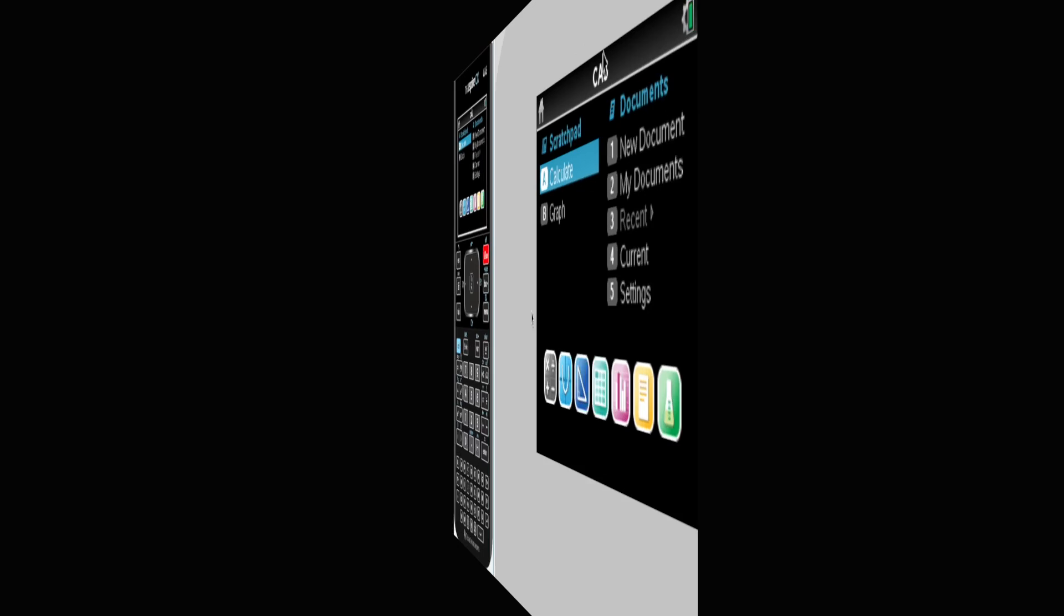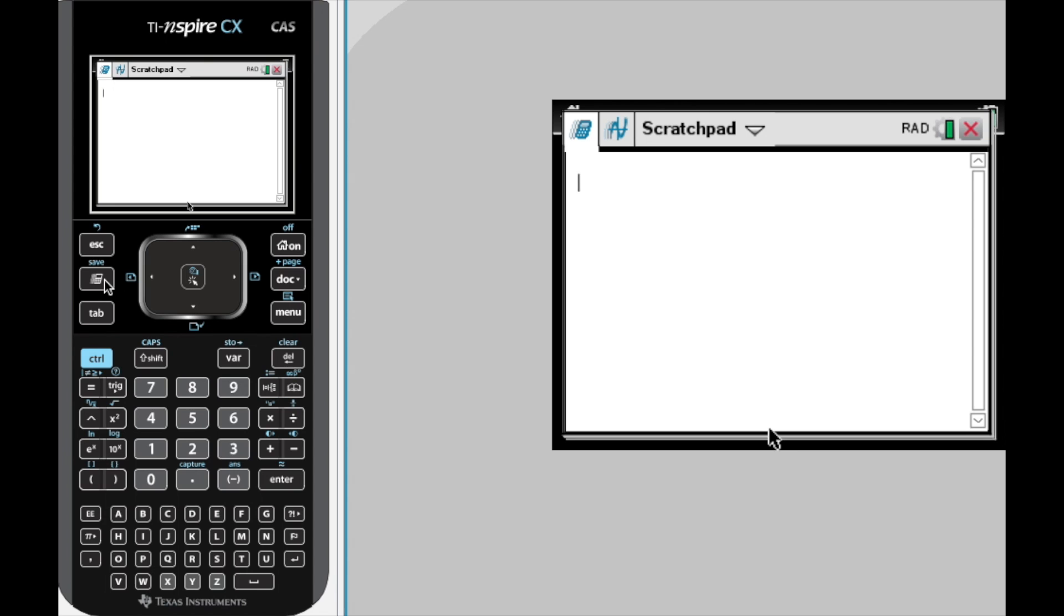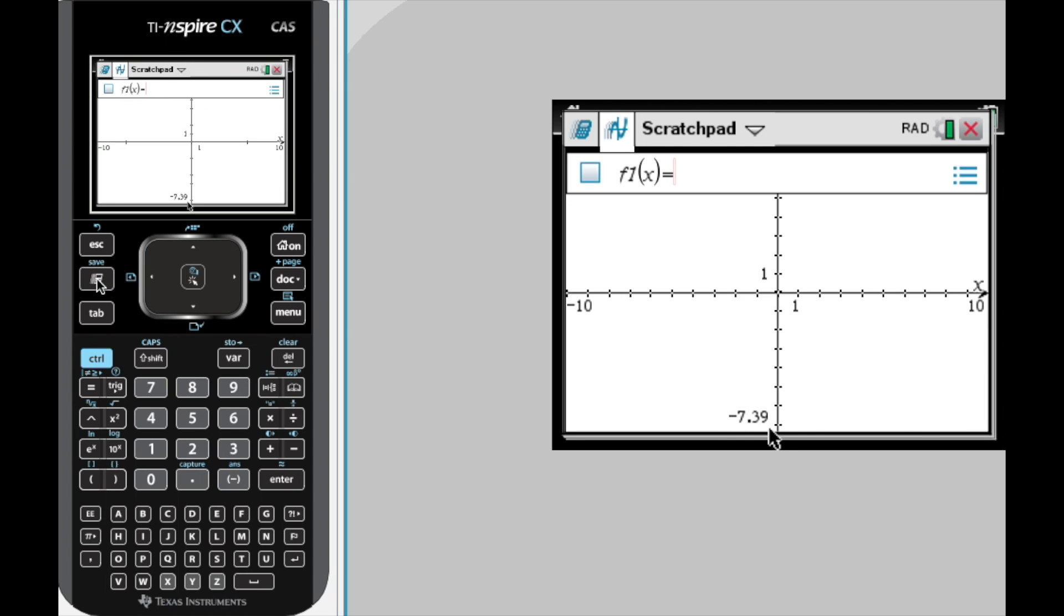So just in case you had any question, we got our TI Inspire up here. You can do this, of course, with an 83 or 84. We are going to toggle through to the touchpad and with an 83 or 84 or with this Inspire, you can go ahead and graph that function. So of course, it is not going to go through the same keystrokes if you have an 83 or 84.